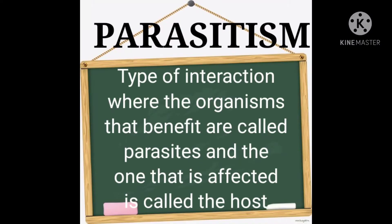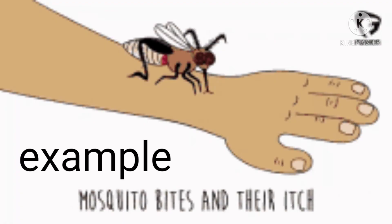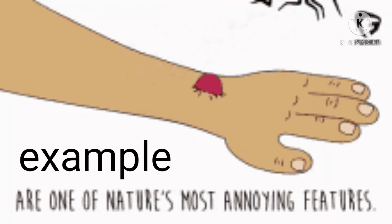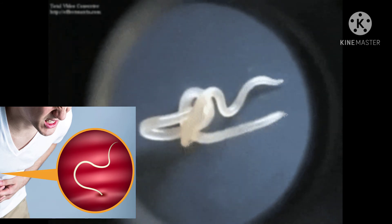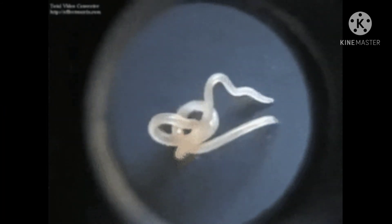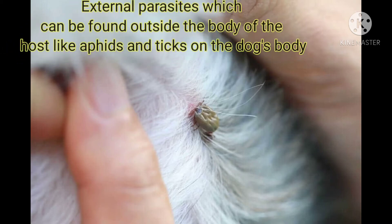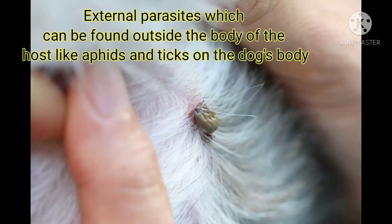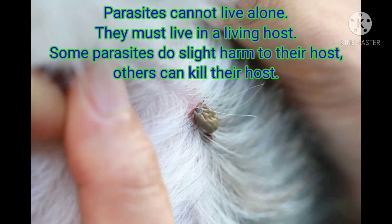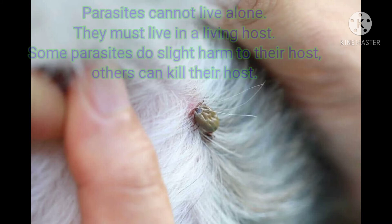Parasitism is the type of interaction where the organisms that benefit are called parasites and the one that is affected is called the host. Example: man and mosquito. Aside from sucking blood, mosquitoes can cause dengue fever and chikungunya. Parasites can be internal — found inside the host's body, like Ascaris — or external, found outside the host's body, like aphids and ticks on a dog. Parasites cannot live alone; they must live in a living host. Some do slight harm, while others can kill their host.